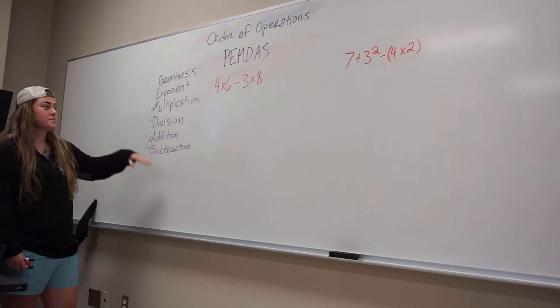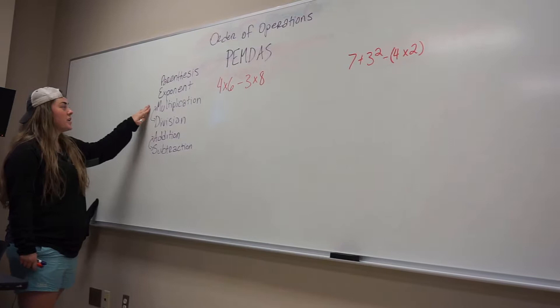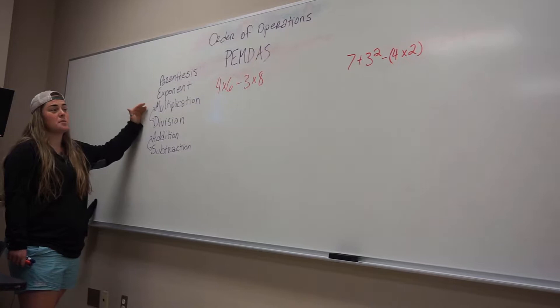The first thing we look for is parentheses. We don't see any parentheses, so we go to the next one, exponent. We don't see any exponents. Then we got multiplication. The funny thing about multiplication and division is that they can be flipped, so if division comes first when it's on the left, we can do division. But if multiplication is first like it is in this problem, then we do that first.